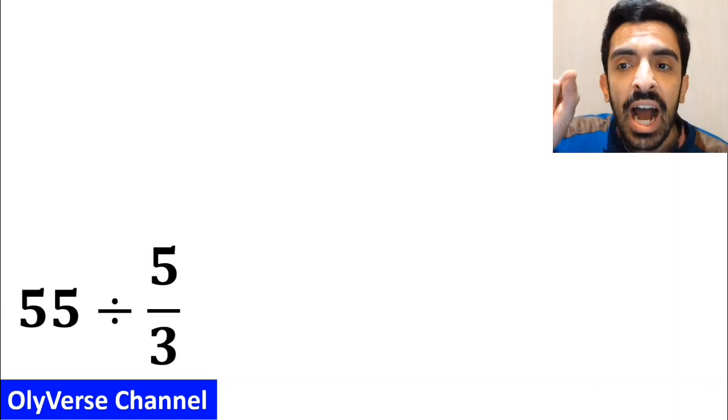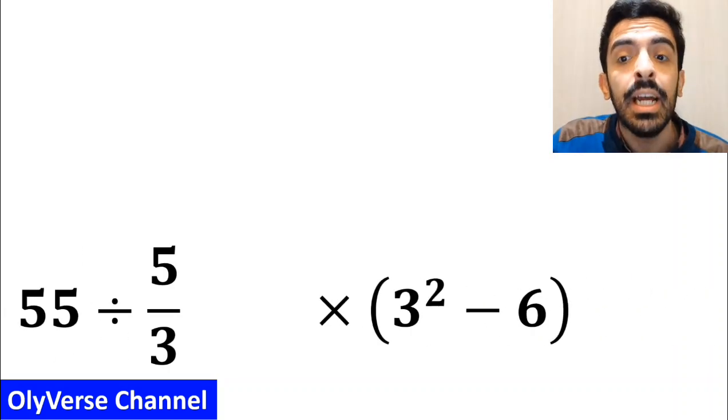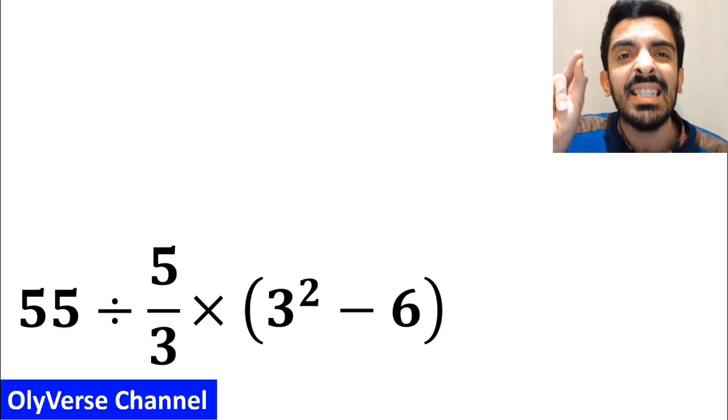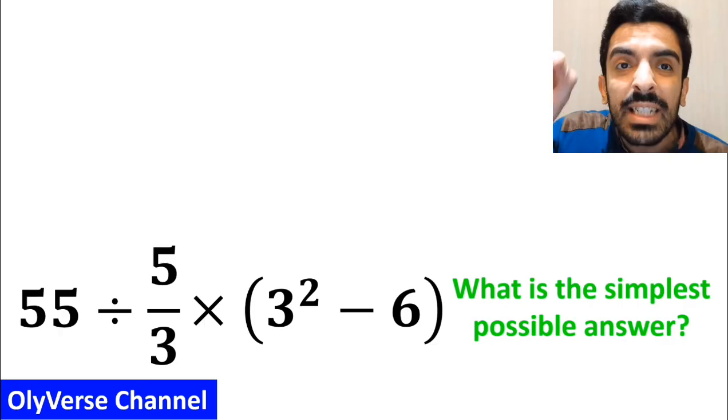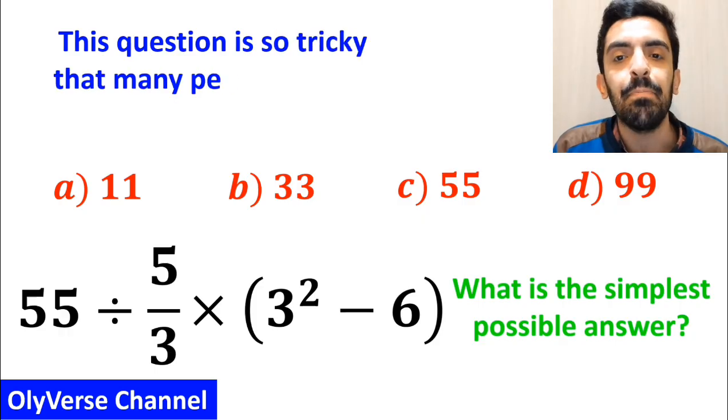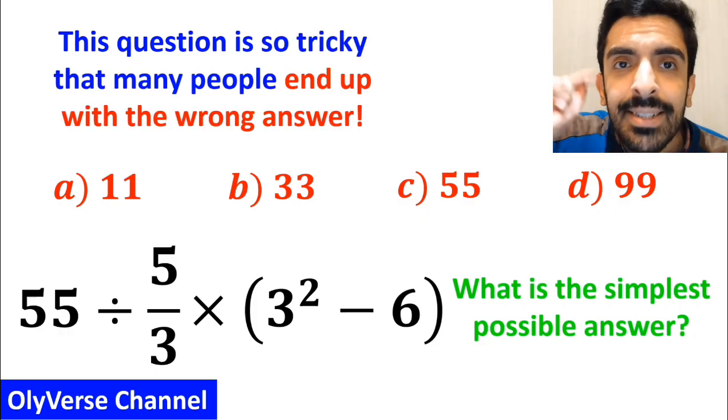If we have the expression 55 divided by 5 over 3 multiplied by open parenthesis 3 to the power of 2 minus 6 closed parenthesis, then what is the simplest possible answer to this question? Which option do you think is correct? This expression is so tricky that many people end up with the wrong answer.